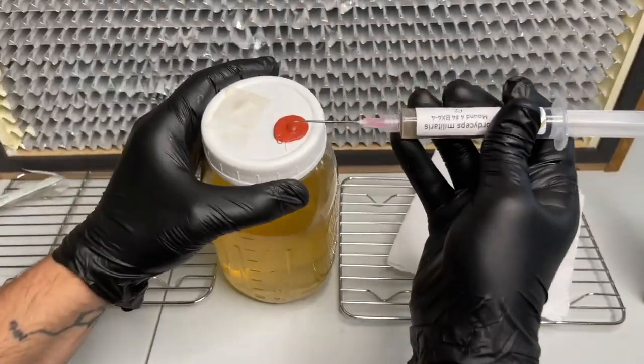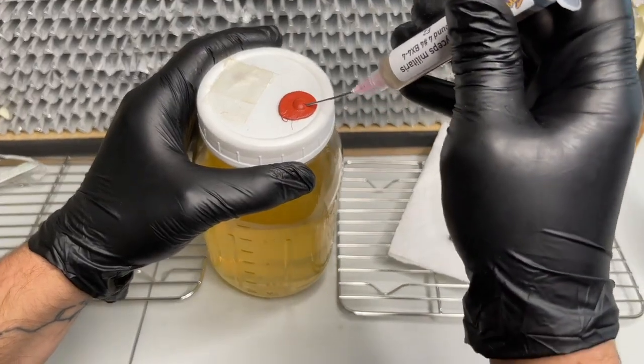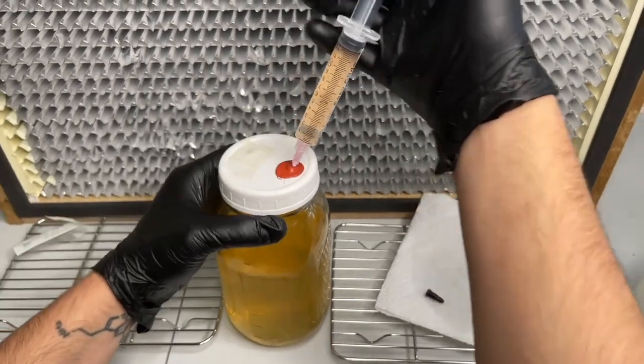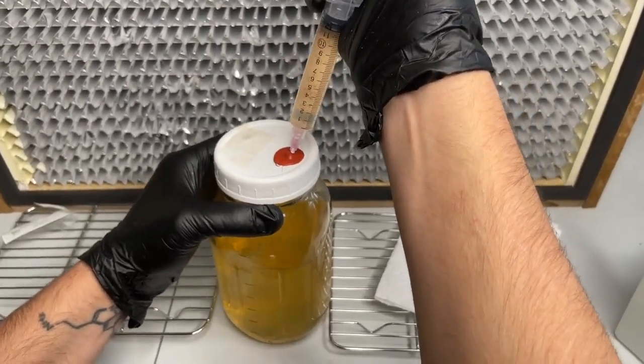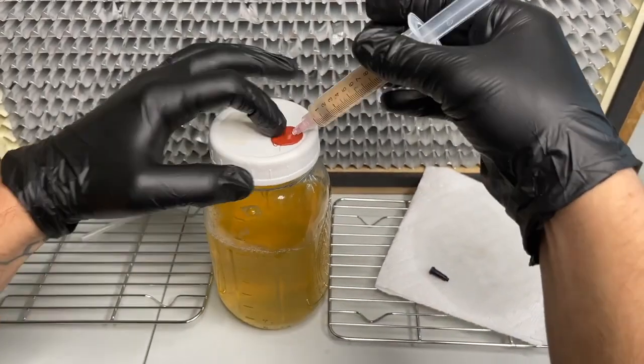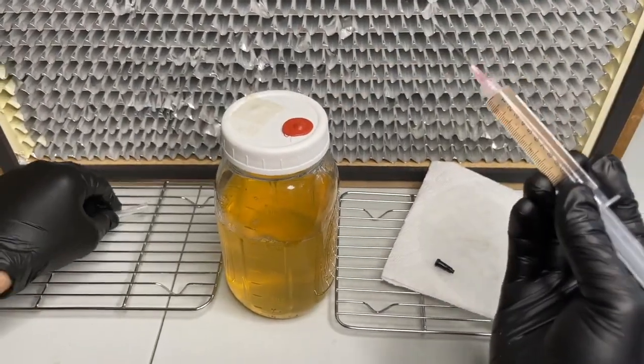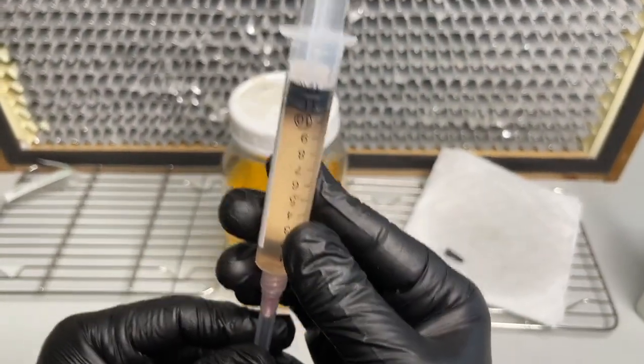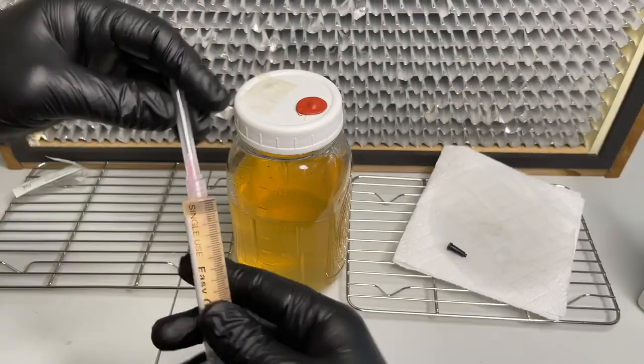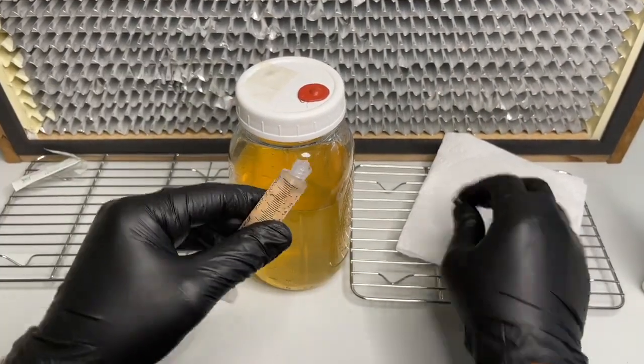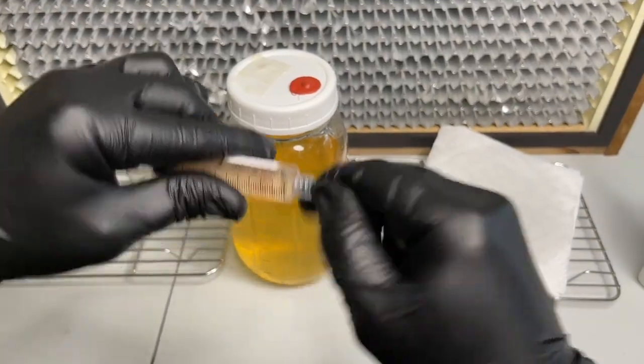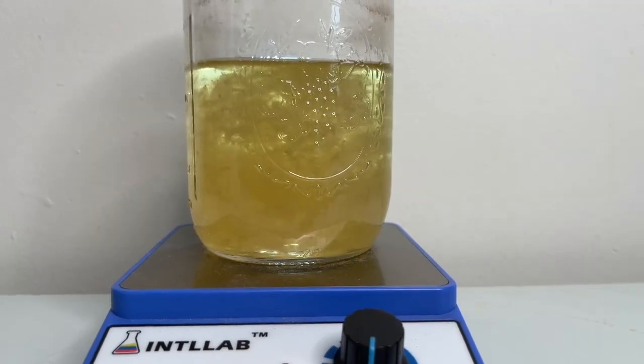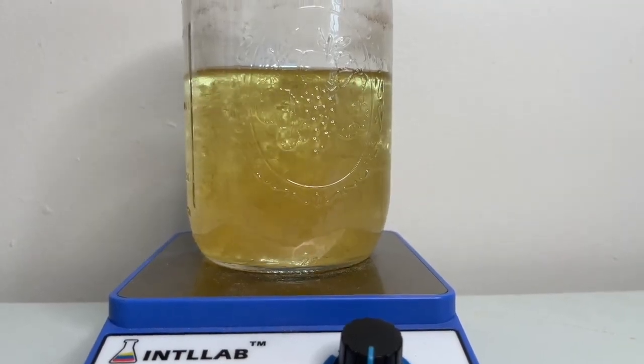Now inoculate your sterilized honey water with one to two milliliters of the liquid culture. The liquid culture should now be incubated in the dark at no higher than 70 degrees Fahrenheit. After about five days of using the magnetic stir bar the liquid culture should look something like this.